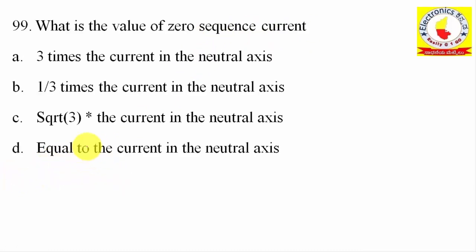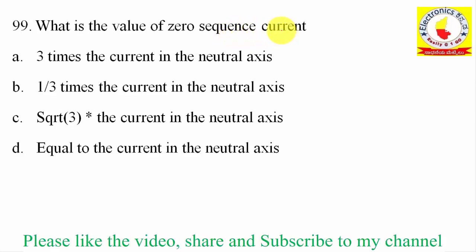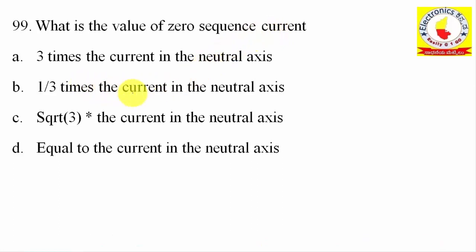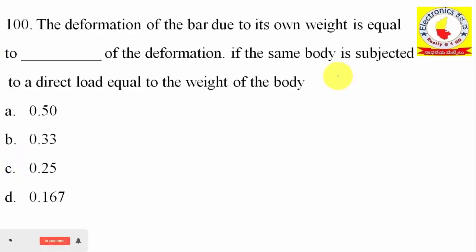99th question: What is the value of zero sequence current? It is one-third times the current in the neutral axis — not three times, not root three times. Option B.